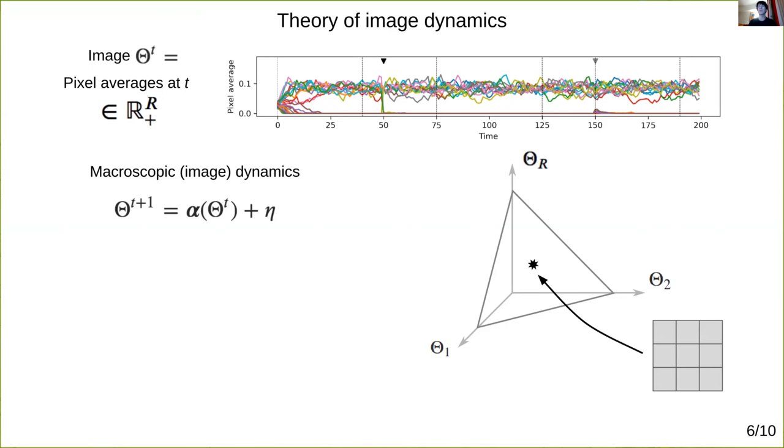All components of theta being equal is a uniform gray image, whereas sparser thetas correspond to images with only a subset of pixels active, which is what the overall network tends to produce.